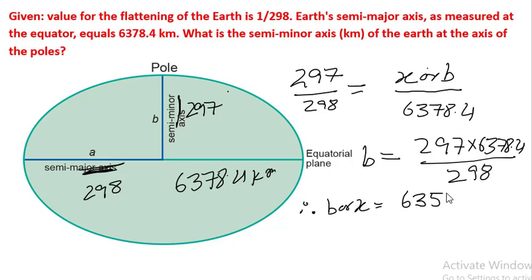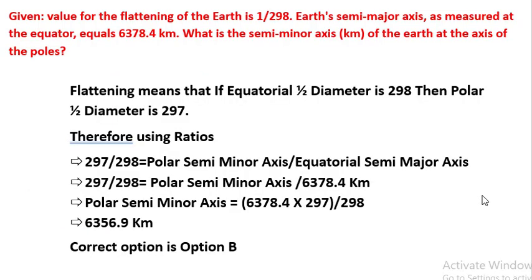To summarize: flattening means that if the equatorial half-diameter is 298, then the polar half-diameter is 297. Therefore, using ratios, 297 upon 298 equals the polar semi-minor axis upon the equatorial semi-major axis. Calculating this gives the actual answer as 6356.995 kilometers, which can be approximated as 6357 or 6356.9 kilometers. The correct option is option B.